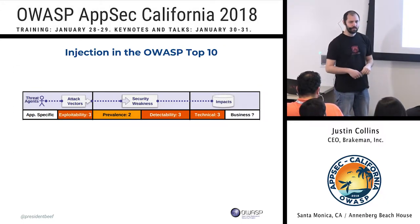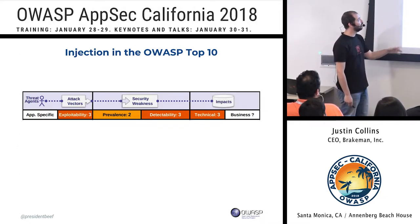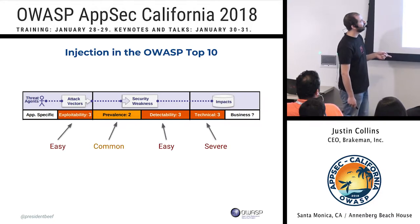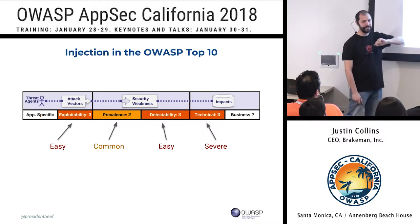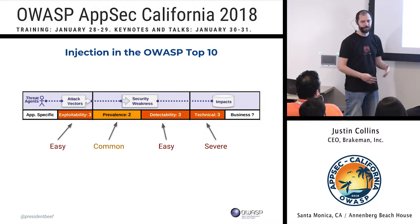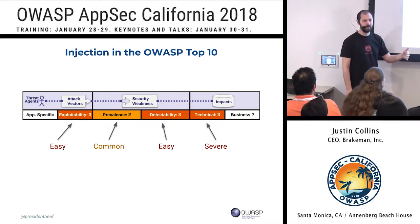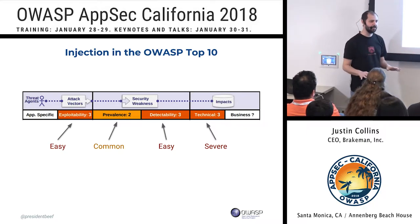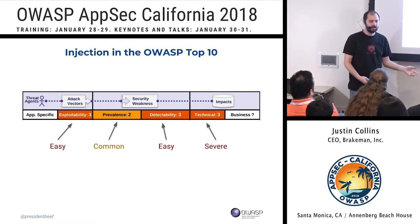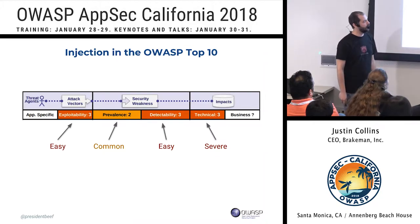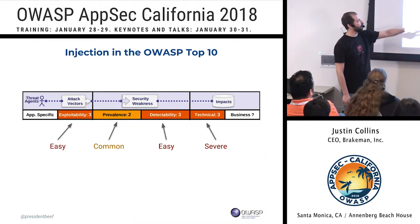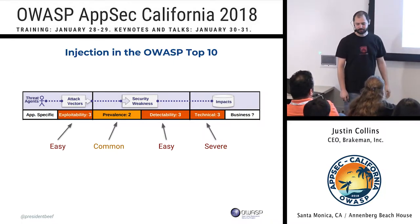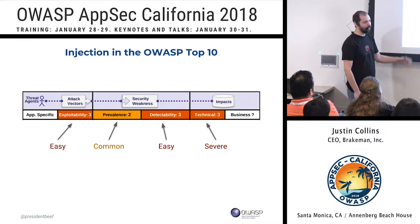Looking at the 2017 OWASP Top 10, here's what they say about injection: exploitability is 'easy' — if you know it's there, it's easy to exploit, and you'll find all kinds of nice payloads on the internet. SQL injection is especially well-understood. Prevalence is middle-of-the-road — common, not widespread but not rare. Detectability is 'easy' — relatively easy to find in an application. Technical impact is 'severe.' Three of four metrics are at their worst, one is in the middle — that's why it's at the top.